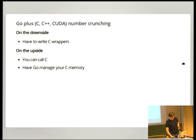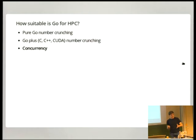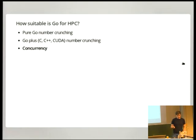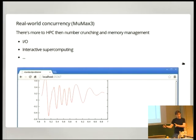This brings me to the final section: concurrency. Concurrency means your program is doing several things at the same time, not necessarily in parallel but really different tasks simultaneously. Going back to our real-world example, our micromagnetic simulation code — some things we want to do concurrently with our computations, for instance I/O.